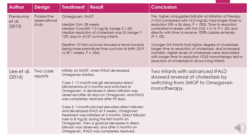In 2016, Lee et al. explored two case reports where two infants with advanced intestinal failure-associated liver disease showed a reversal of cholestasis by switching from Smoflipid to Omegaven monotherapy. In case 1, an 11-month-old girl developed direct bilirubinemia at 3 months and the patient's lipid emulsion was switched to Omegaven. A decrease in direct bilirubin was observed after 60 days on Omegaven and the intestinal failure-associated liver disease was completely resolved after 90 days.